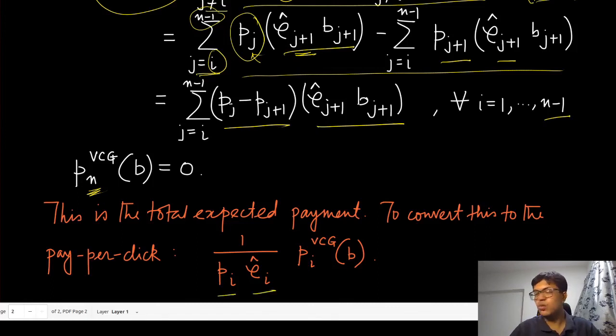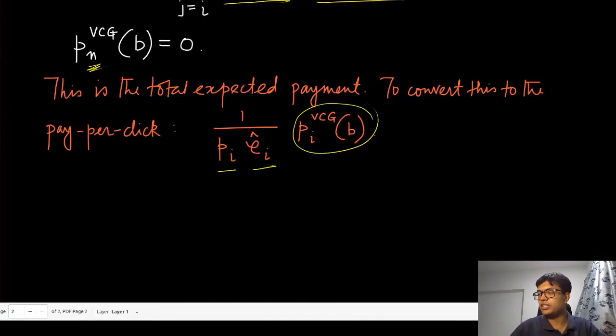What the search engine or the publisher can charge for a specific click is by dividing by the probability of that click. p_i times ρ_i hat is essentially the probability of getting a click for this agent i at the ith position. If that quantity is in the denominator and the payment we just discussed is in the numerator, that is the payment this agent makes for every click. That is how the VCG mechanism is actually implemented in the context of sponsored search auctions.